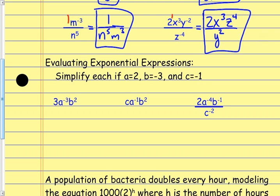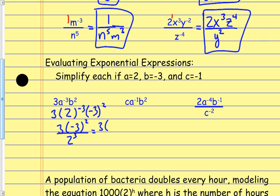To evaluate the exponential expression, we have values to plug in. I would start by plugging things in using parentheses. So this is 3a to the negative third times b to the second, with a equal to 2 and b equal to negative 3. Now take care of the negative exponents — this goes to the denominator, giving us 3 times negative 3 to the second power over 2 to the third. That becomes 3 times 9 all over 8, which reduces to 27 over 8.